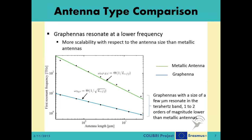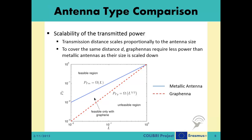Consequently, graphennas with a size of a few micrometers resonate in the terahertz band, one to two orders of magnitude lower than metallic antennas. Another notable advantage of graphennas is that to cover the same distance with an electromagnetic wave, graphennas require less power than metallic antennas as their size is scaled down. As you can see from the figure, the transmitted power requirement of graphennas is one order lower than metallic antennas for an antenna with a size of 1 cm.